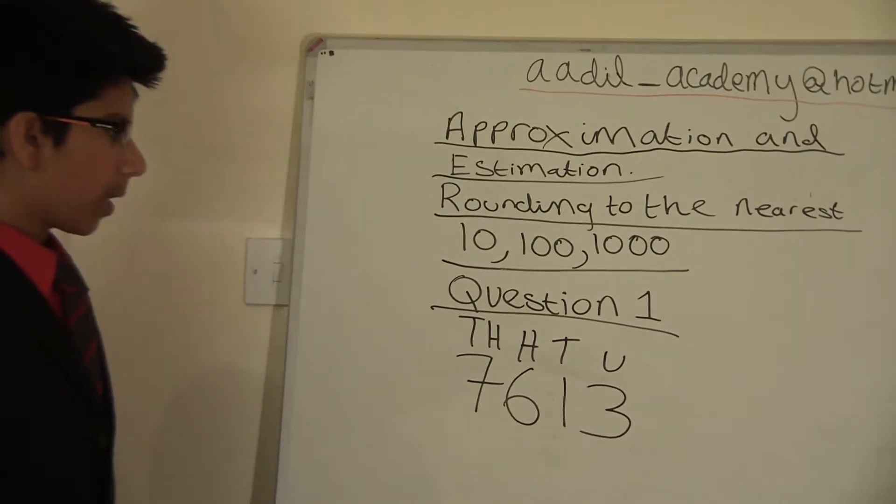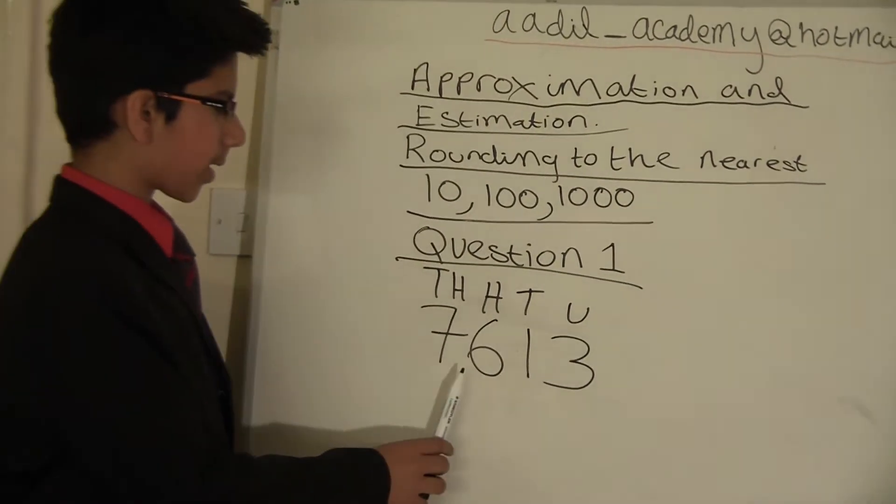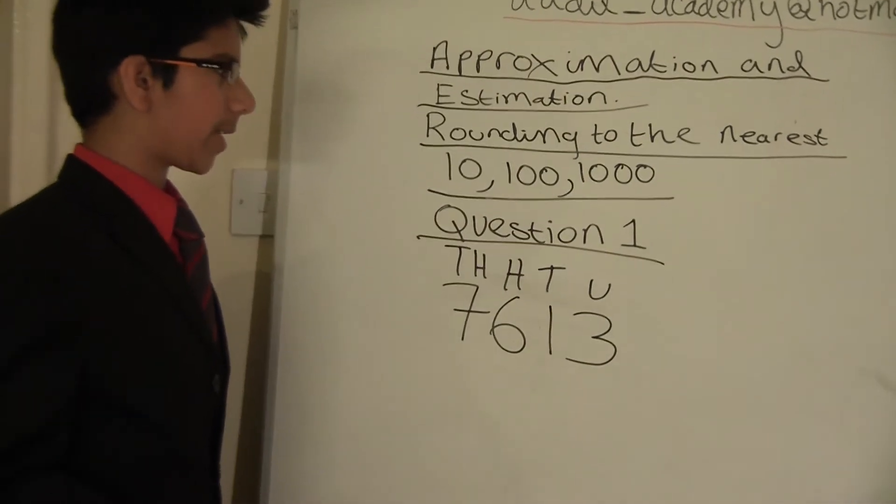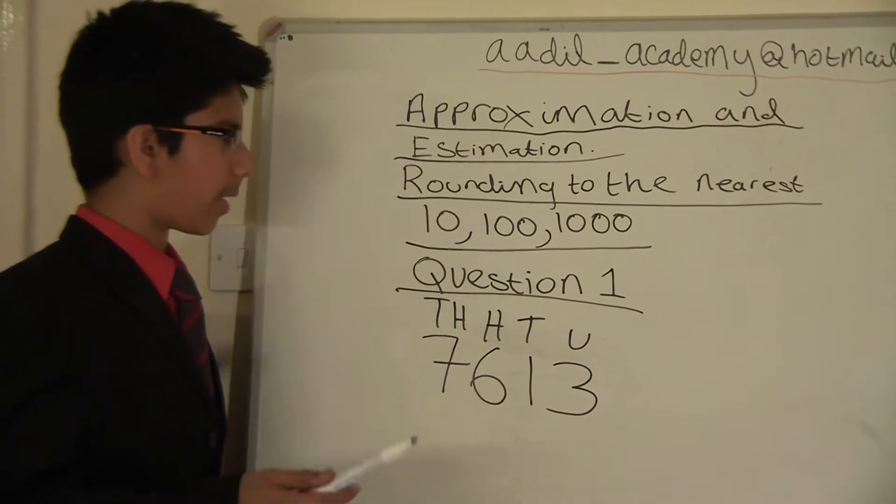Question number one. Today our number is 7613. First of all, we will have to round this to the nearest ten, then a hundred, then a thousand.